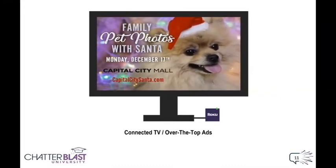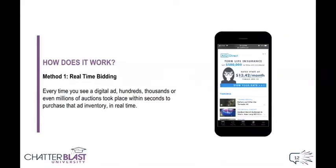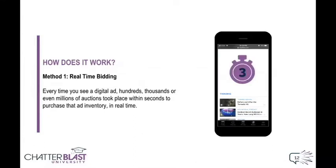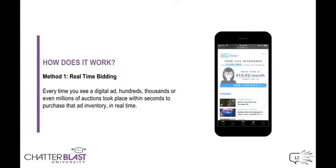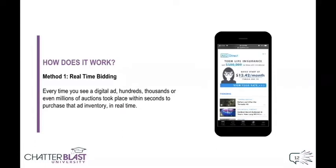So how does it all work? How do we serve these ads and what makes them programmatic? The first way is real-time bidding. If you visit a website, you might notice that your article or website loads way faster than the ads. And that's because within that time, thousands or millions of auctions are taking place in those extra seconds. The winner of the auction is paying money to get your eyeballs on their ad, and that money is going back to the website or publisher.